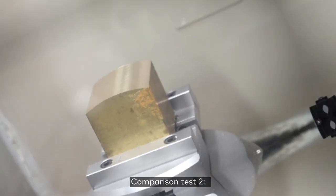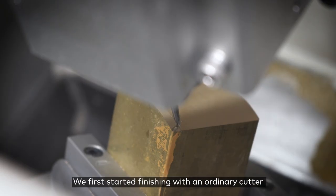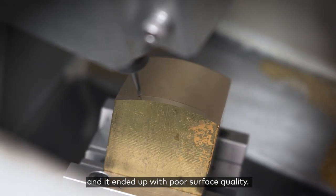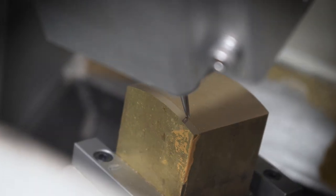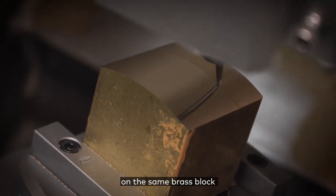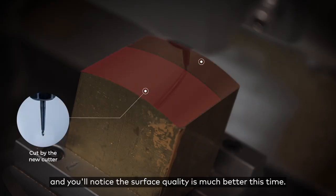Comparison test two: wavy surface cutting with different cutters. We first started finishing with an ordinary cutter and it ended up with poor surface quality. Then we used a better tapered ball nose end mill cutter on the same brass block and you'll notice the surface quality is much better this time.